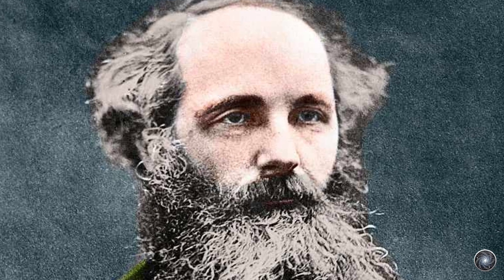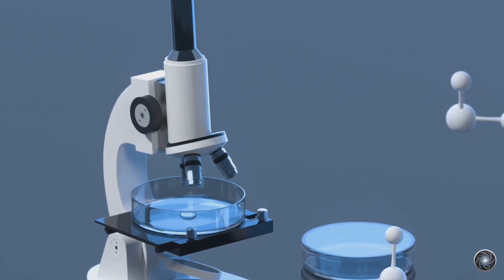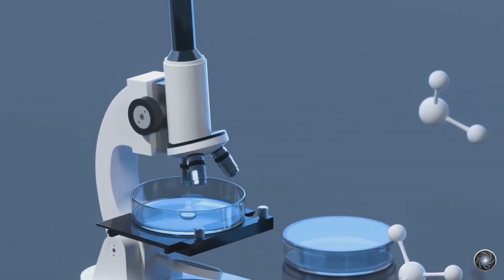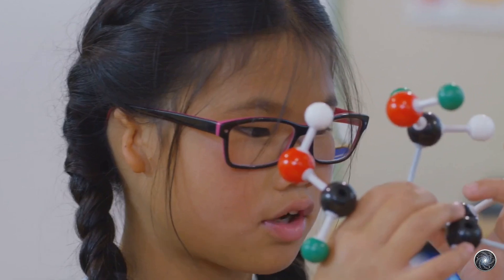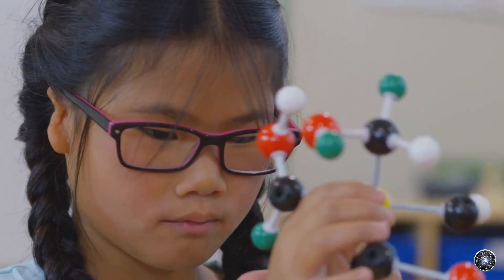Maxwell did more than just electromagnetism. He looked at the tiny world of gases and figured out how they work based on how tiny particles inside them move. This was called the kinetic theory of gases, and it helped us understand how things with lots of tiny particles behave.